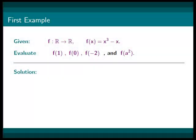In our first example, we have a function f that has a domain and range of all real numbers. The function is f(x) equals x cubed minus x. And we are asked to evaluate f at 1, f at 0, f at negative 2, and f at a squared.